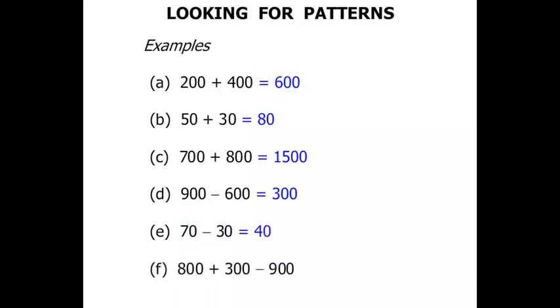And next one: 800 plus 300 minus 900. Right, we're dealing with hundreds, aren't we? So let's think: 8 plus 3, that's 11 so far, minus 9 is 2. So let's write the 2 down. We are dealing with hundreds, so at the end, let's put two zeros to make it 200.